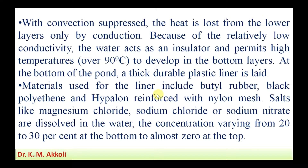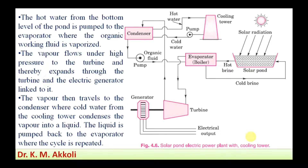The materials used for the liner include butyl rubber, black polythene, and Hypalon reinforced with nylon mesh. The salts used — magnesium chloride, sodium chloride, or sodium nitrate — are dissolved in the water to create concentration gradients varying from 20 to 30 percent at the bottom to almost zero at the top layer. With this setup, we can now look at how the solar pond power plant works.